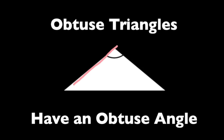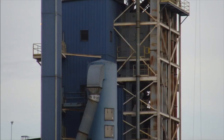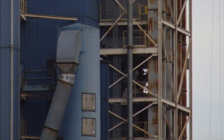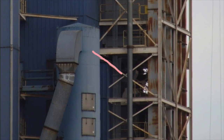Obtuse triangles have one obtuse angle. An obtuse angle is more than 90 degrees. This grain elevator has an example of an obtuse triangle — you can see that the bottom angle in the triangle is obtuse.